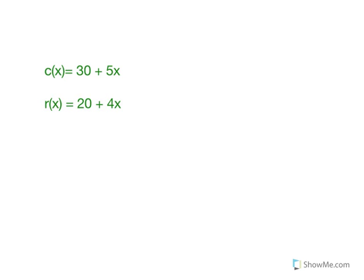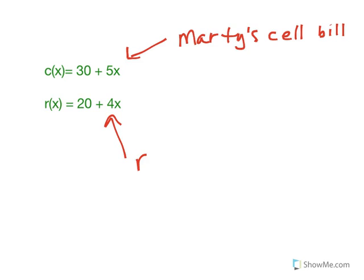So I want to look back at these two functions. The function we got in the first problem about Marty's cell phone bill, which was thirty dollars plus five dollars per gig. And then problem two, which was about our rabbits, which were twenty rabbits plus four rabbits per day.